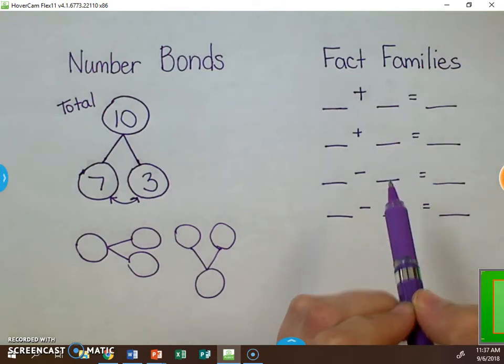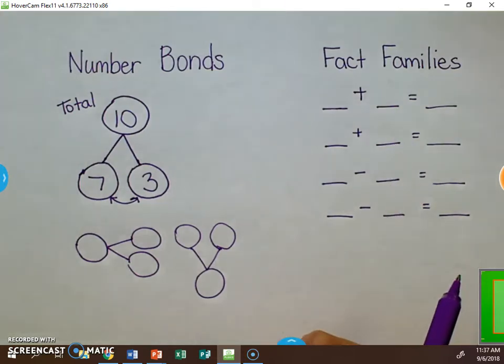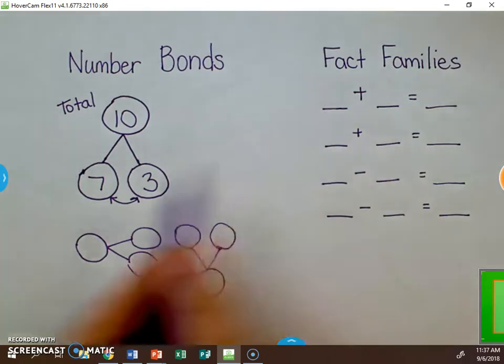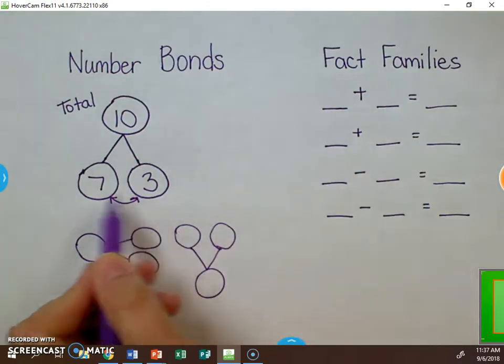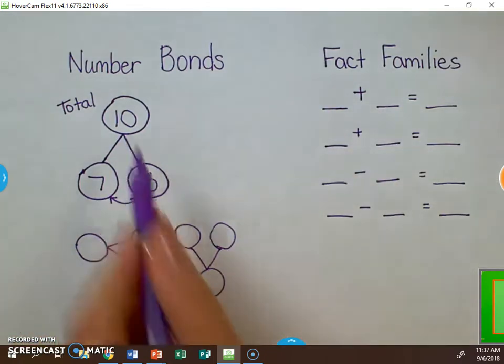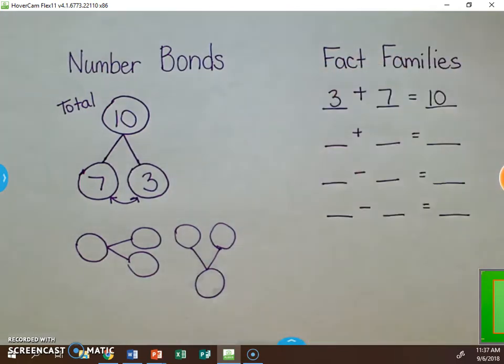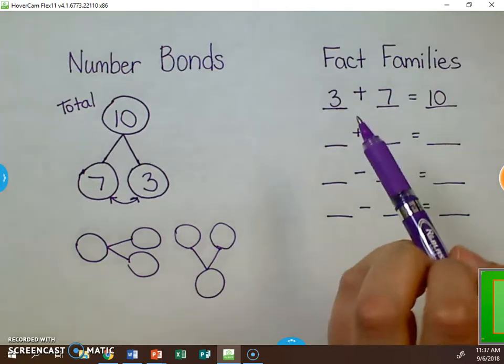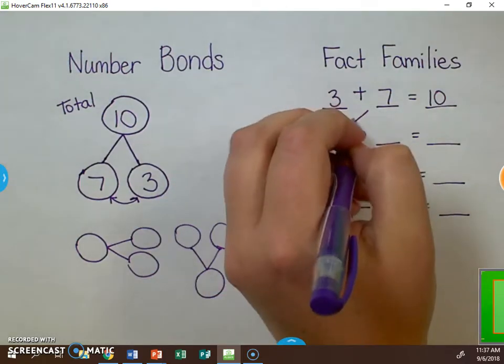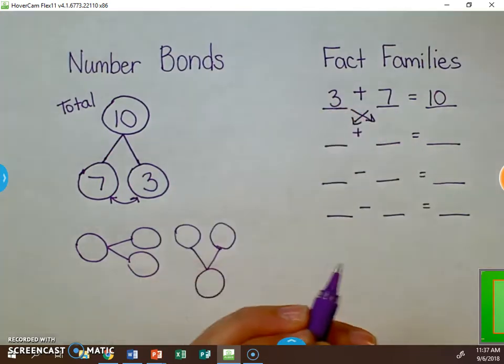create two addition sentences and two subtraction sentences that work together. So for example, we know that 3 and 7 add together to create 10. We can create one addition fact, and then we can switch the numbers—this is called the commutative property—and come up with another addition sentence.